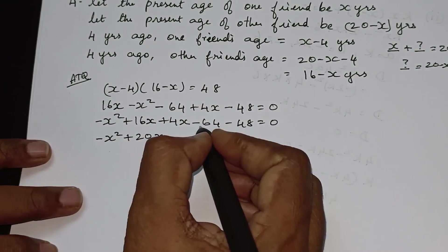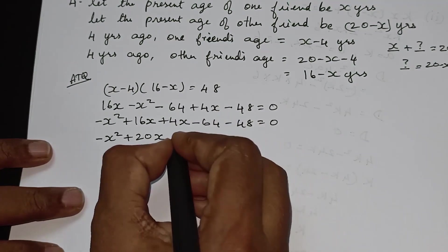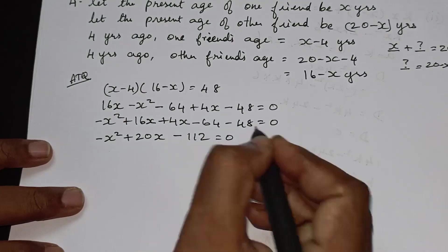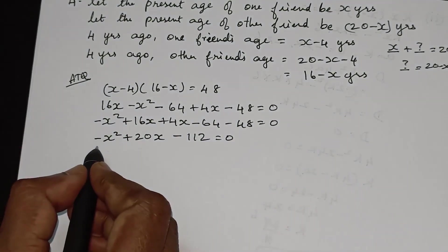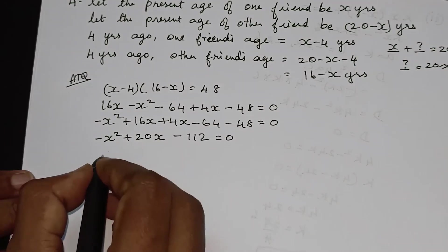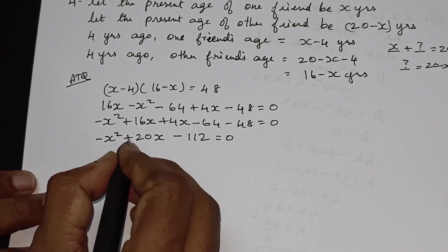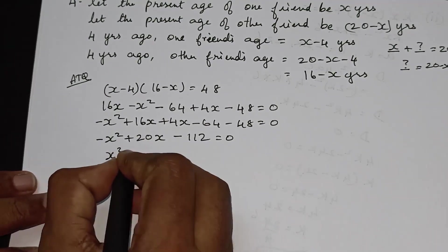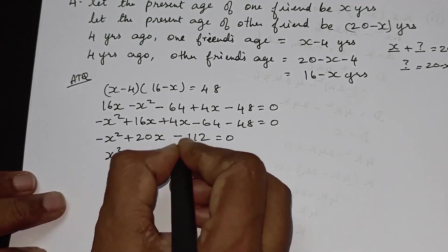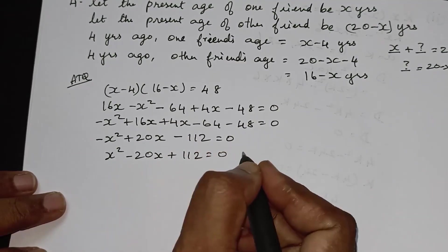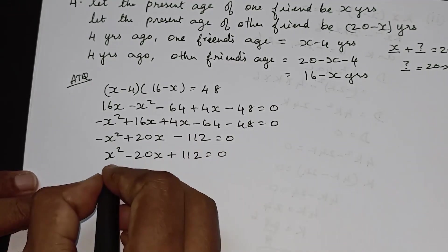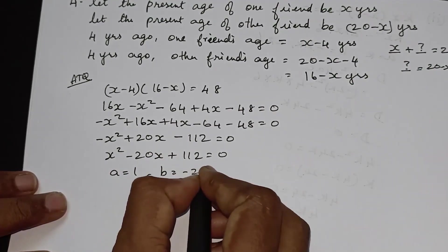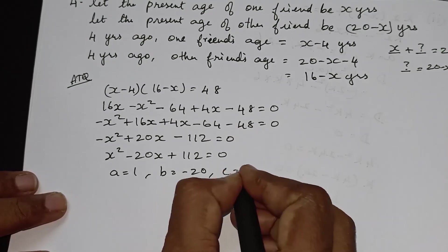Changing signs, this becomes x² − 20x + 112 is equal to 0. So a is equal to 1, b is equal to −20, c is equal to 112.